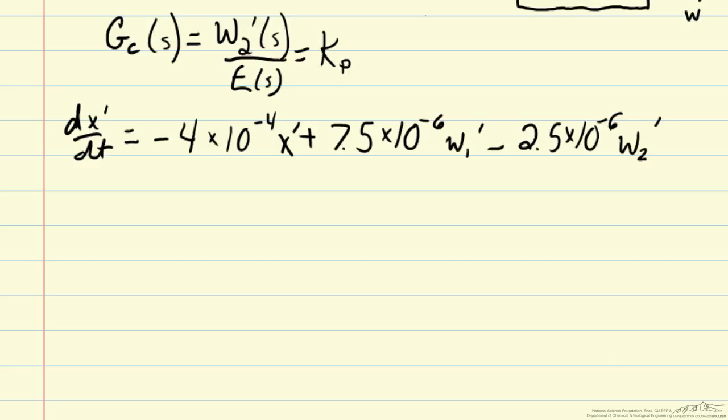In this example, we're not considering any deviations in the flow rate of stream 1. Previously, that was our disturbance variable in previous screencasts. But here we'll assume that's not deviating, and we're really focusing on how we can achieve our desired value of x by adjusting w2.